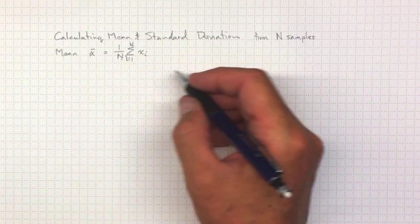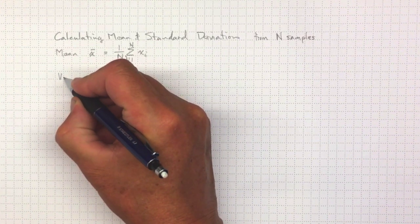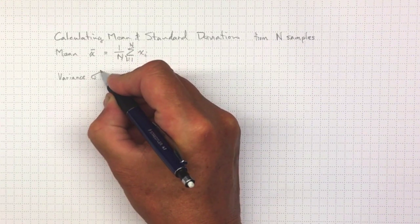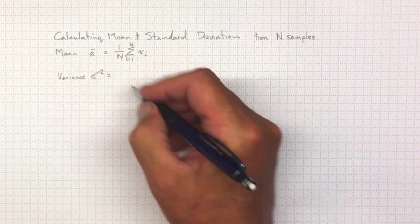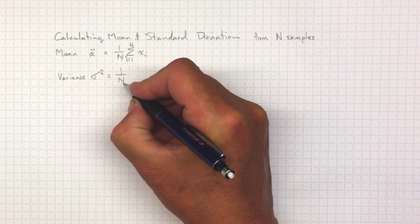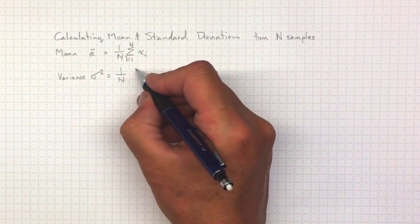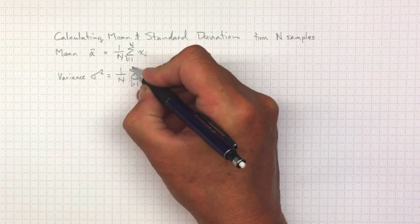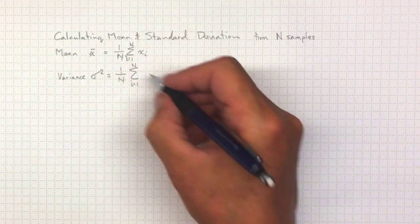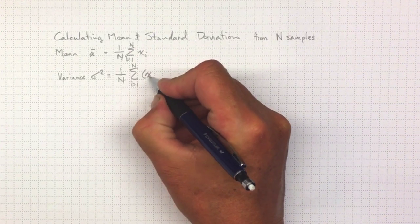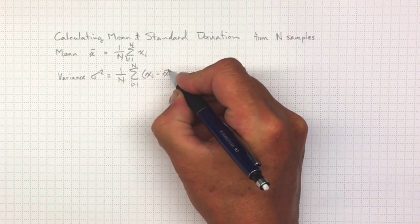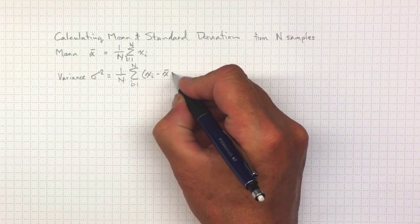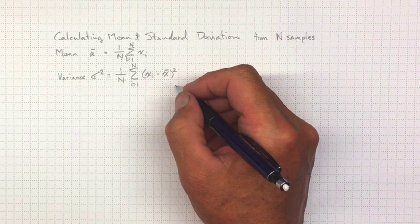Likewise, the variance is defined, and that's just the square of the standard deviation, so σ², as the average of the square of the deviation of any sample from the mean. So that's again going from i equals 1 to n, xi minus x̄, the difference of any one sample from the mean of all samples, squared so that's always positive.